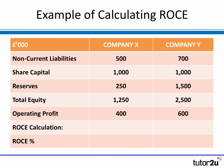If you want to have a go at calculating ROCE before seeing the solution, pause the video and try it now. ROCE is operating profit divided by total equity plus non-current liabilities. For Company X: £400,000 divided by £1.25 million plus £500,000, so 400,000 divided by £1.75 million. For Company Y: they have higher operating profits but also higher capital employed — £2.5 million equity plus £700,000 non-current liabilities — so 600,000 divided by £3.2 million.